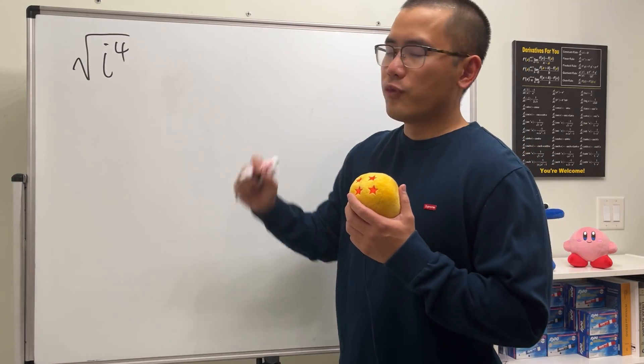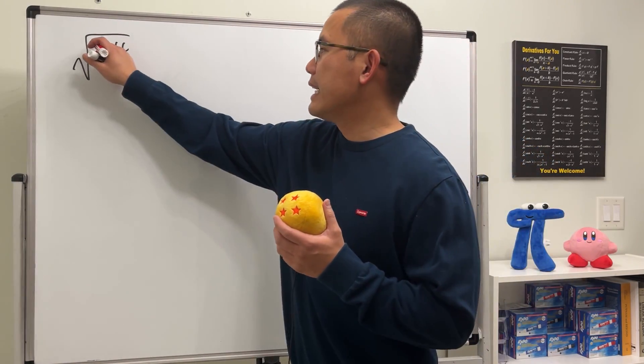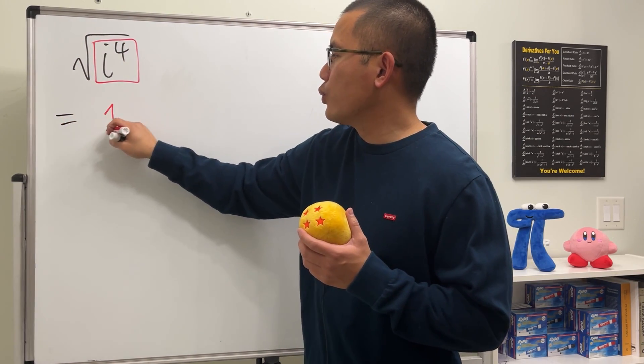So just a real quick video on the square root of i to the fourth power. The way you do this is inside out. So look at i to the fourth power. This right here is just equal to 1.